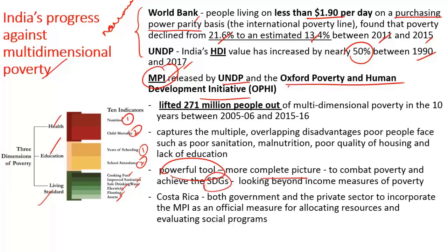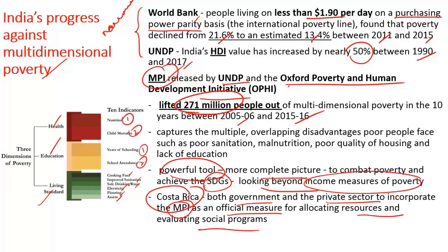Poverty is nothing but deprivation — poverty is inequality dispersed. The approach to eradicate poverty should involve a multi-dimensional approach, and the MPI provides that multi-dimensional analysis. The MPI mentions that India has lifted 271 million people out of multi-dimensional poverty in the decade between 2005-06 and 2015-16. India should follow the example of Costa Rica, where both government and the private sector incorporated the MPI as an official measure to allocate resources and evaluate social programs.